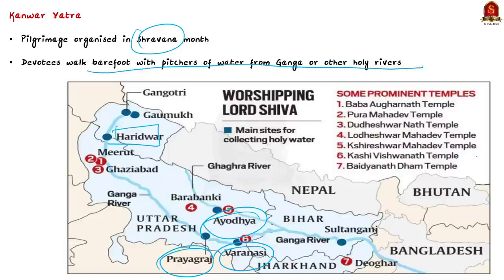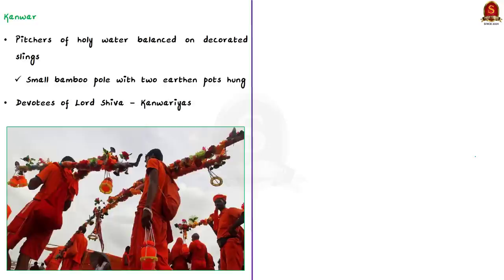This is the Kanwar Yatra. The Kanwar is a small bamboo pole on which two earthen pots are hung on either end for carrying the Ganga jal on the shoulders to offer to Lord Shiva. Devotees carry the pitchers of holy water on their shoulders balanced on these decorated slings known as Kanwars. All devotees of Lord Shiva who participate in this Yatra are called Kanwariyas.